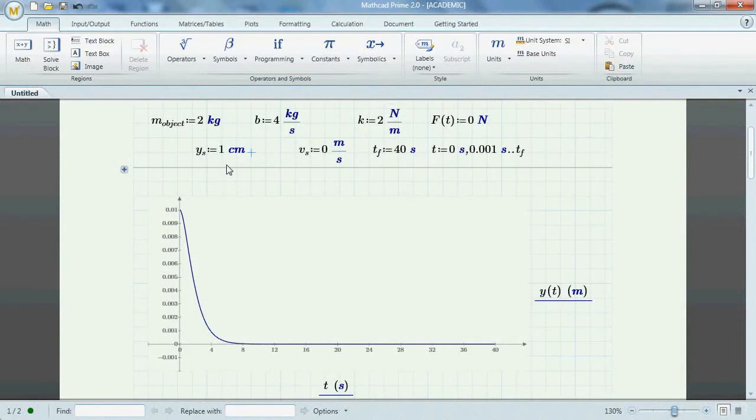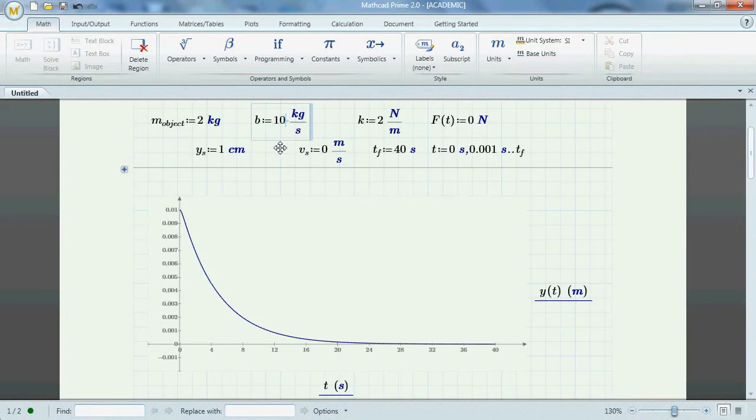Notice how the function comes down fairly quickly. Now, let me move this b constant up quite a bit. Let's take it to 10. When I press enter, watch how this line moves, this graph line. See how it moves to the right, and now it's taking a lot longer to get to 0. Move it back here so that you can see. There's critically damped. There's overdamped.